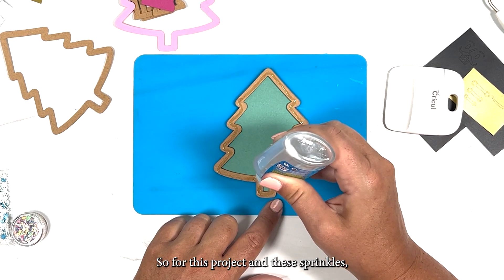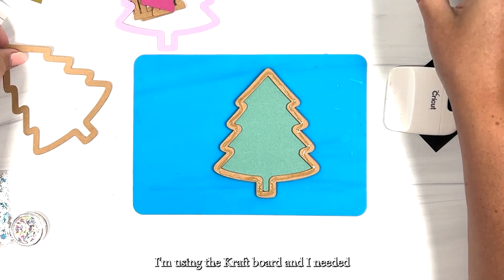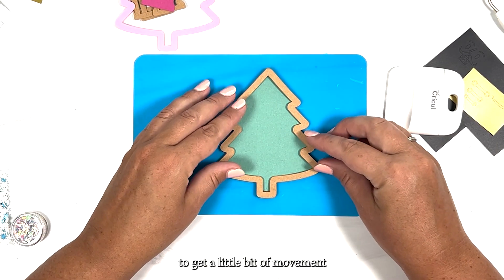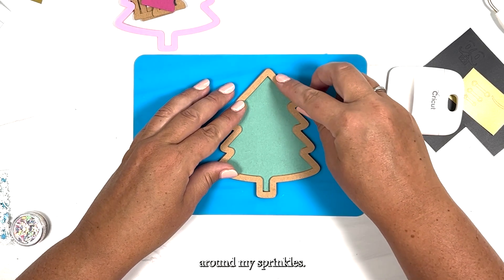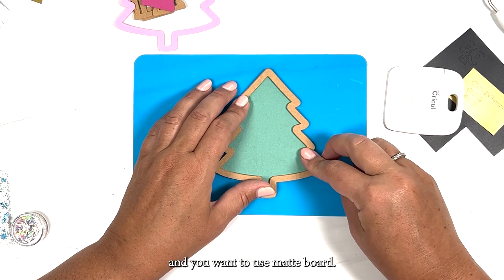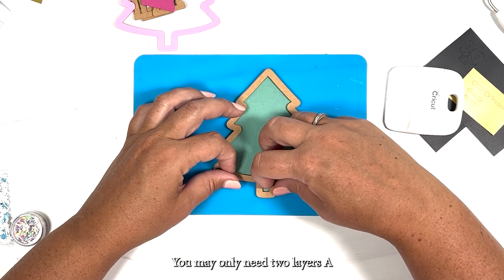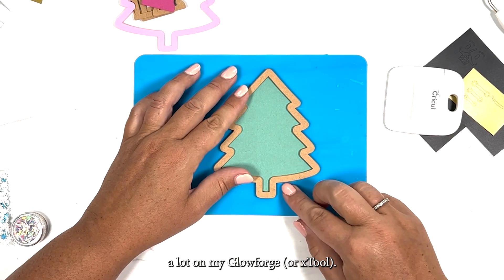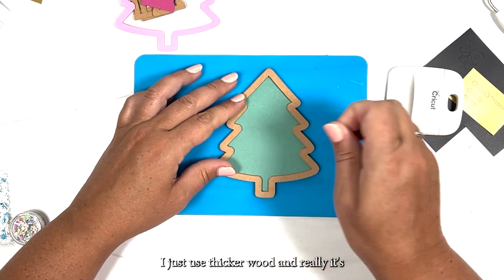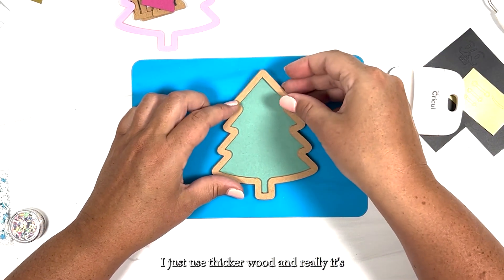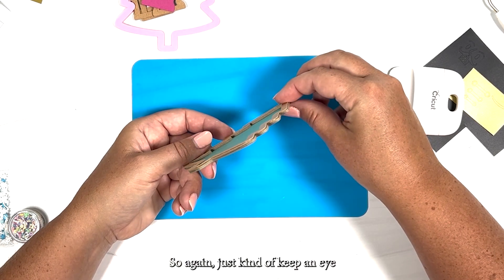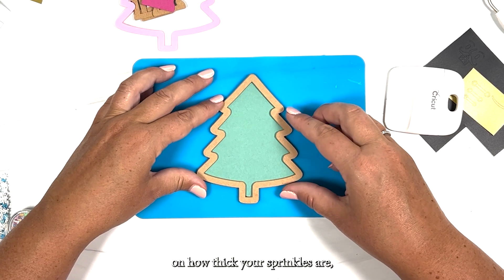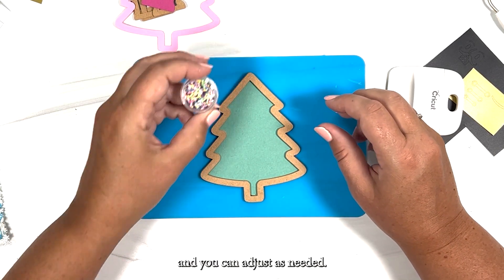So for this project and these sprinkles, I'm using the craft board and I needed four layers to get a little bit of movement around my sprinkles. But say you have a Cricut Maker and you want to use matte board, you may only need two layers of matte board. I do make these a lot on my Glowforge and so for that, I just use thicker wood and really it's maybe one layer. So again just kind of keep an eye on how thick your sprinkles are, how thick your paper is, and you can adjust as needed.